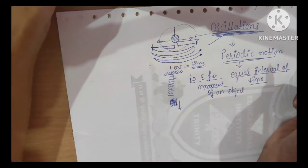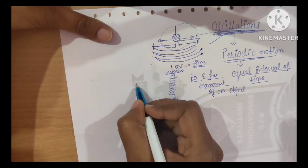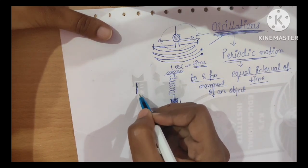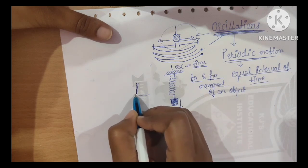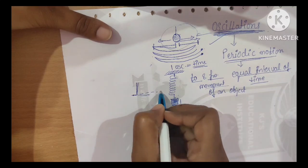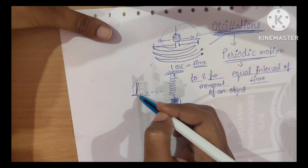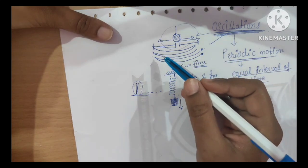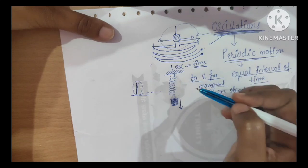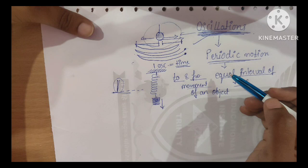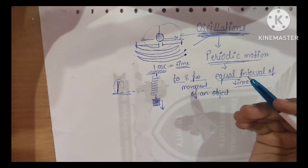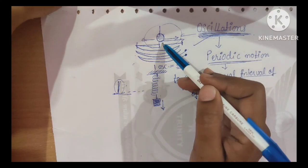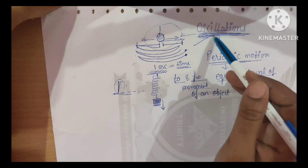If you see the needle on a sewing machine — the needle on the sewing machine moves up and down repeatedly. That repeated motion is also an oscillation. So sewing machine, pendulum, spring — these are all examples of oscillations.